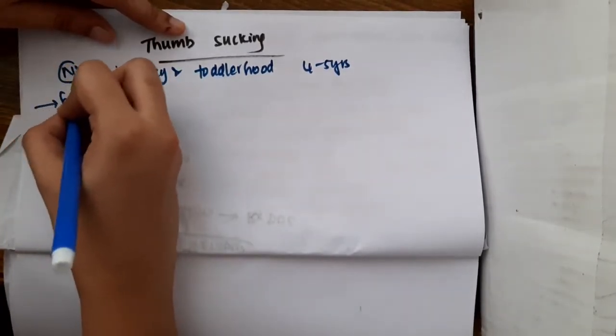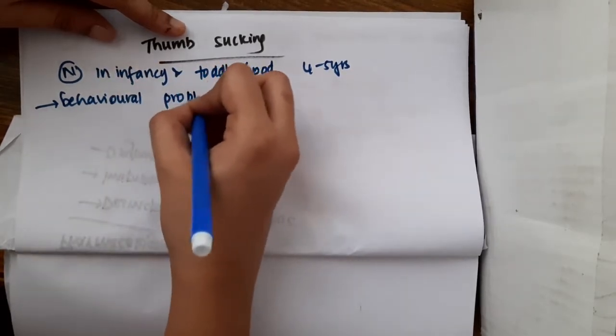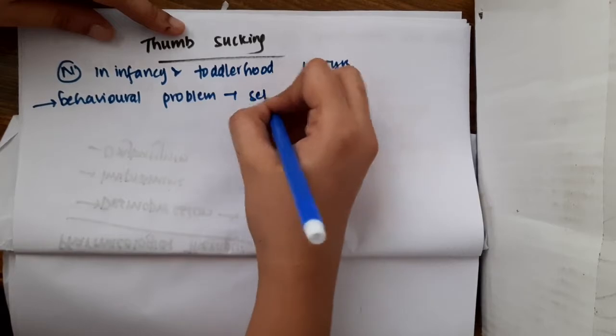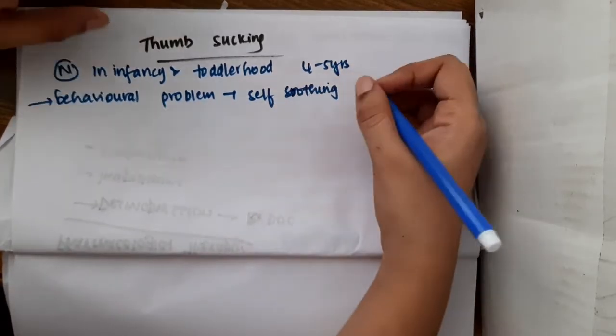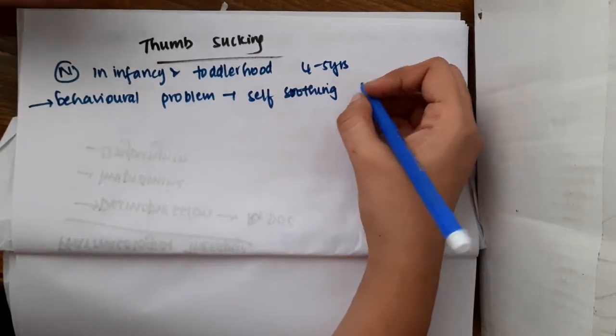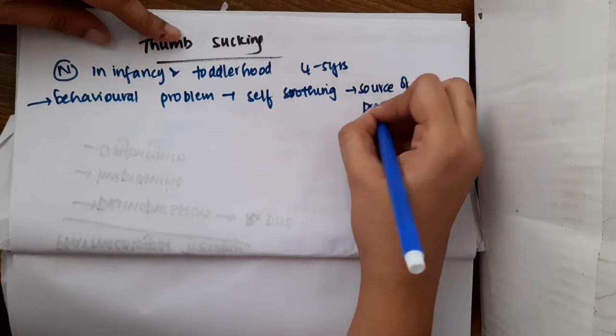Later, after 4 to 5 years of age, this becomes a behavioral problem. It is self-soothing, and once the child starts sucking the thumb, he feels it to be a source of pleasure.